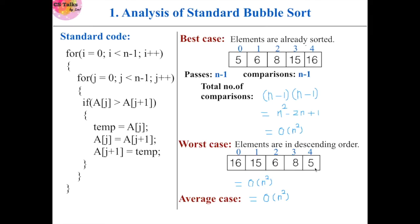We can conclude that standard bubble sort does not consider the arrangement of elements — it does not check whether the input array is already sorted. Also, after each pass the largest element moves to its correct position, so there is no need to compare against it in upcoming passes. Standard bubble sort ignores this and performs unnecessary comparisons.